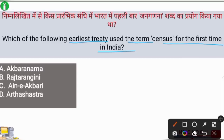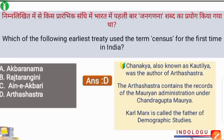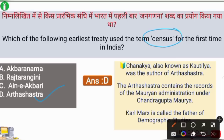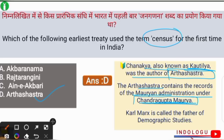Next question: which of the following was the earliest treaty to use the term 'census' for the first time in India? The correct answer is option D — Arthashastra. Arthashastra by Kautilya, also known as Chanakya, was the book where the term 'census' was first used. The Arthashastra contains records of the Mauryan administration under Chandragupta Maurya.